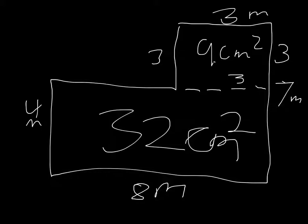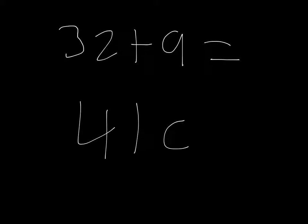So now we have to add both of the areas of the square and the rectangle, and then we'll get the area of the whole irregular polygon, which will be 41 centimeters squared. Don't forget to add the square, because that's a common mistake that some students miss.